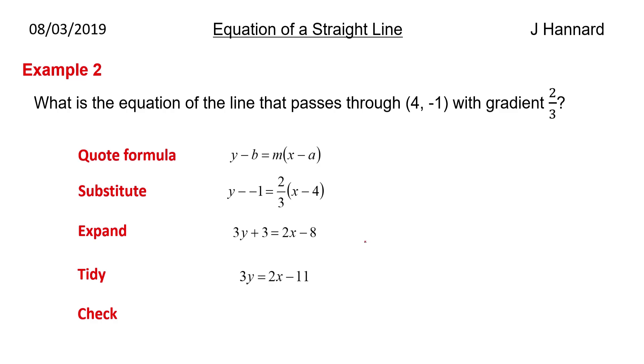So tidy that up, and then you get 3y equals 2x minus 11, and if you want to put that into y equals mx plus c form, we say y equals 2 thirds of x minus 11 over 3. So check that then: 3 times minus 1 is equal to 2 times 4 minus 11, so that should be minus 3 equals minus 3, and it is 8 minus 11 is minus 3, so again, that's pretty good.